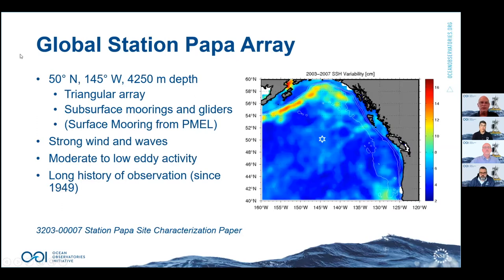The Station Papa array is roughly 50°N, 145°W, about 4,200 meters depth. It's a triangular array and the OOI supplies subsurface moorings and gliders. There's also a surface mooring supplied by the NOAA PMEL lab. The location is of interest because it has strong wind and waves, but more importantly very low eddy kinetic energy — seen as low sea surface height variability in the Gulf of Alaska — making it amenable to quasi one-dimensional process studies, with a long history of observations there.